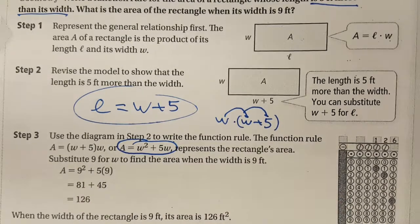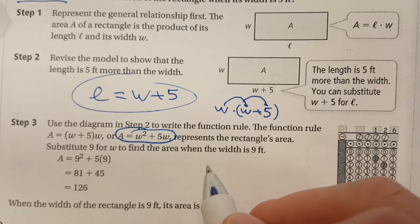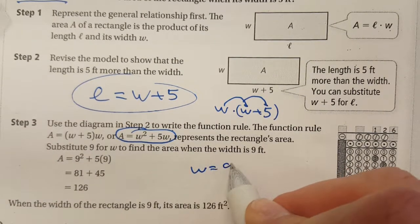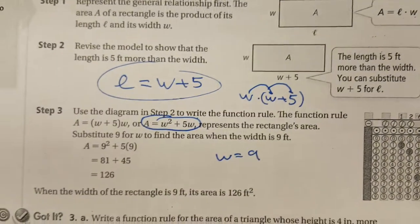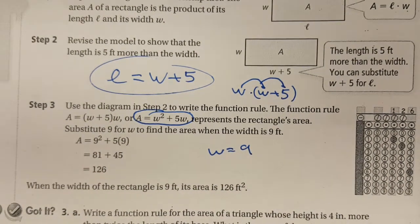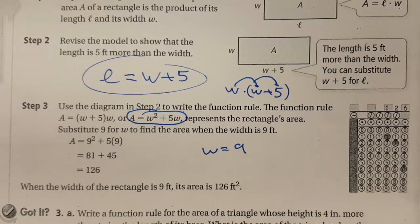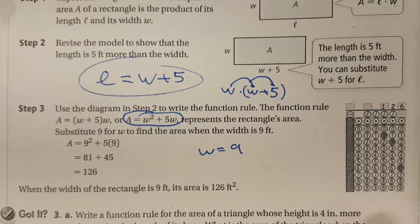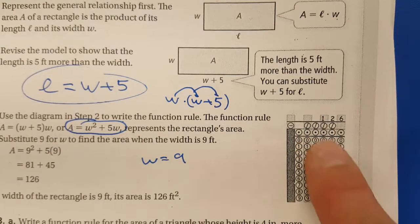So they've already done the work. There she is right there. And then they say, 'Hey, by the way, what happens when the width is 9?' So what happens when W equals 9? You can see they throw it right in there: 9 squared plus 5 times 9 equals 126. So when you have a width of 9 feet, you're going to have a rectangle with an area of 126 feet. Then there's this weird gridded response thing.